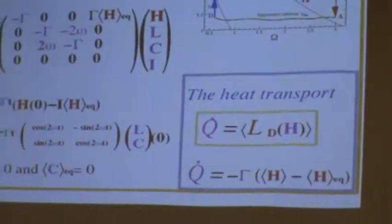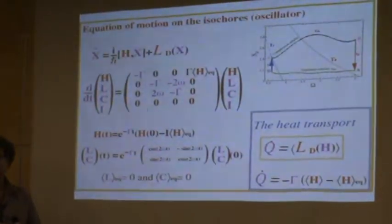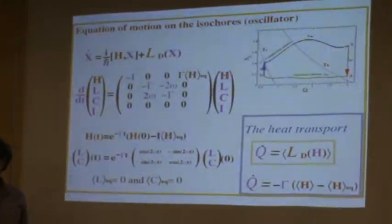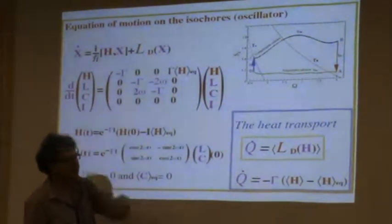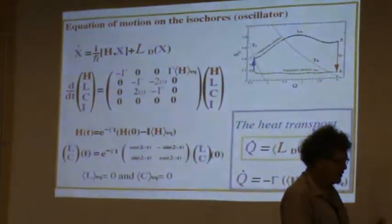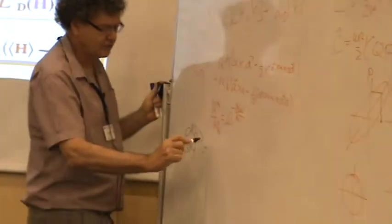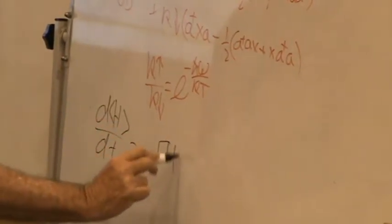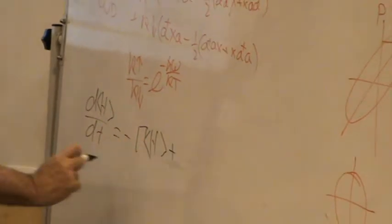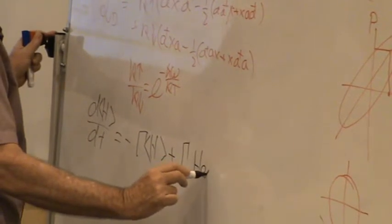So I wrote it in matrix form, we see the equation of motion HLC, and I added identity because we remember that Hamiltonian doesn't relax to zero, it relaxes to thermal equilibrium. So that's why we need identity here. So let's see the first equation, just to get a feeling. The change in time, I can write it like that, of expectation value of the energy is minus gamma times H plus, here I have gamma and the value of H at equilibrium.